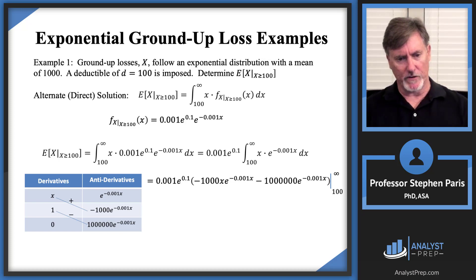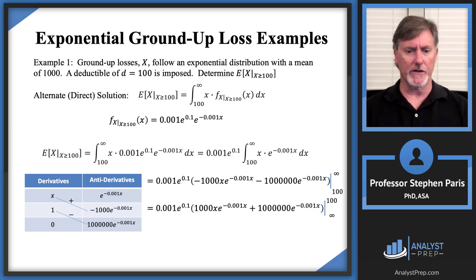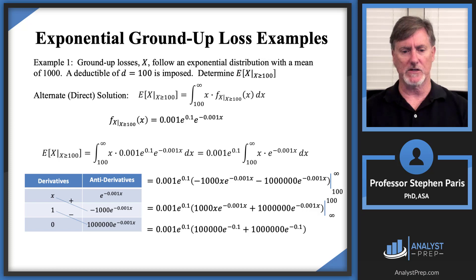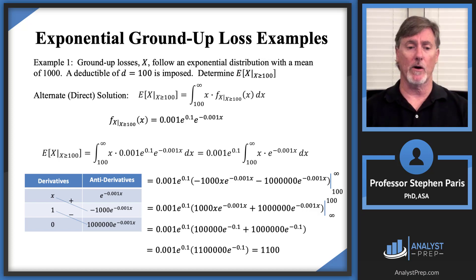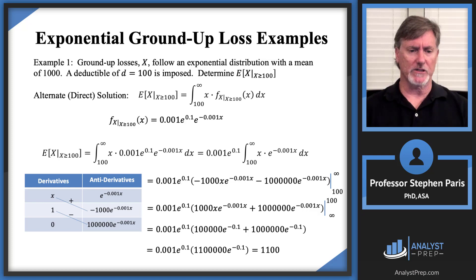Going through the tabular integration by parts, I take the negatives in the parentheses and change their signs to pluses, then interchange the limits of integration to correct that. I plug in 100, subtract off what I get when plugging in infinity — which gives zeros since e to the minus infinity is zero — and go through the arithmetic to end up with 1,100, exactly the same value as the first solution, confirming the memoryless property approach is correct.